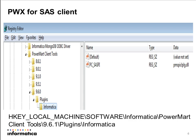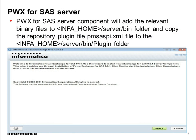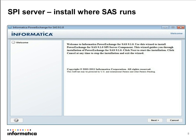Also, the client component adds a registry entry corresponding to PowerExchange for SAS in your Windows machine, named PC_SAS_PI. The PowerExchange for SAS server component adds the relevant binary files to the Infahome server bin folder and copies the repository service plugin file to the Infahome server bin plugin folder.